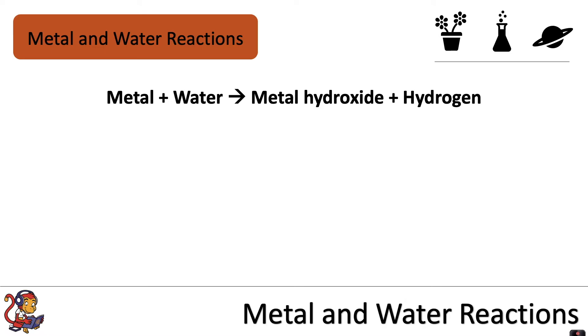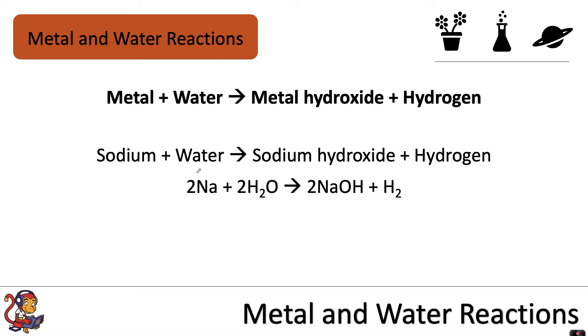When a metal reacts with water it produces a metal hydroxide plus hydrogen, so this is the general equation. Here is an example: when sodium reacts with water it will produce sodium hydroxide plus hydrogen gas. Here is the symbol equation and we can use the periodic table to help us get some of these symbols. So sodium is an element on the periodic table with the symbol capital N lowercase a.